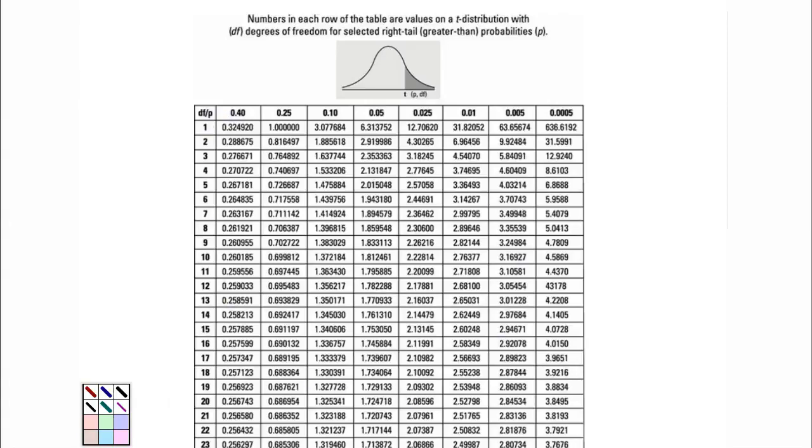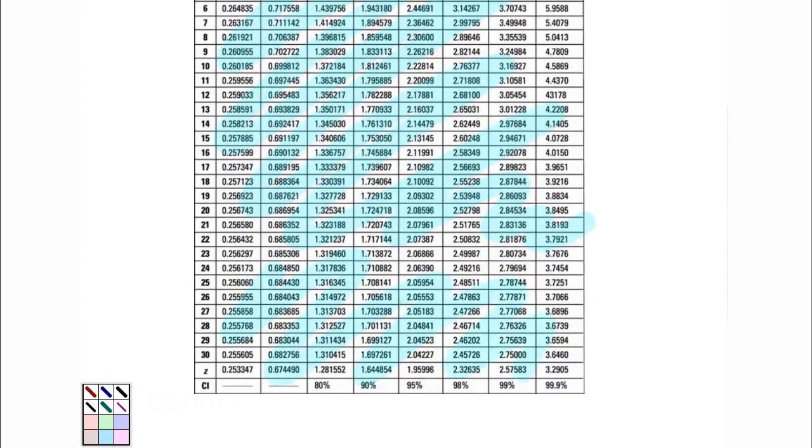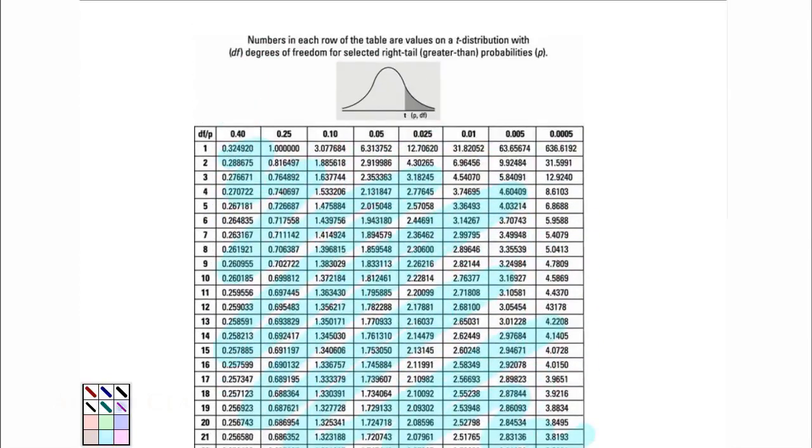Now, if we look at this t-table value, here we have areas. These are all areas under this curve. These all values, this shaded portion, this value is given in your table over here.